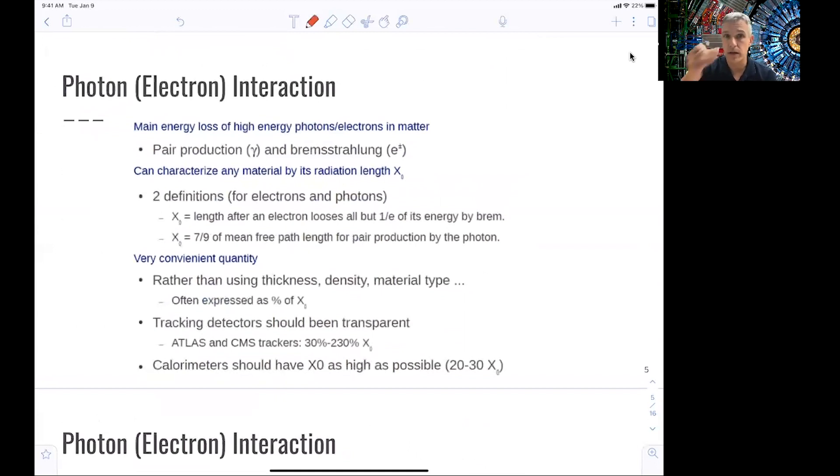Photon or electron interaction. The main energy loss mechanism for high energetic photons and electrons in matter is through pair production and also bremsstrahlung. Bremsstrahlung is the effect when an electron or positron radiates a photon. You can characterize the materials by introducing a concept of radiation length. Radiation lengths can be defined as the length after which an electron loses about 1 over e of its energy by bremsstrahlung. And x0, the radiation length, is defined as 7 ninths of the mean free path length for pair production by a photon. So those are the two definitions, and they're typically used in the regime where the process is dominant.